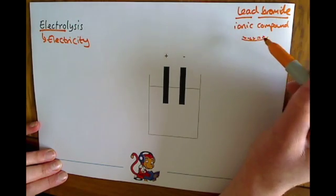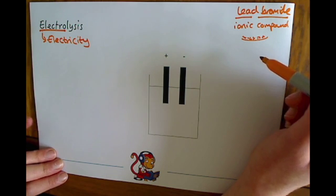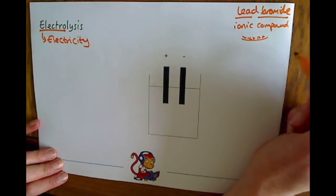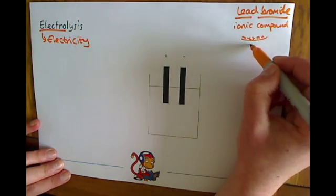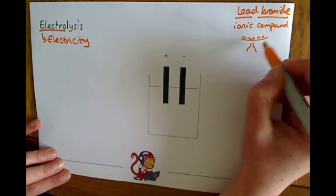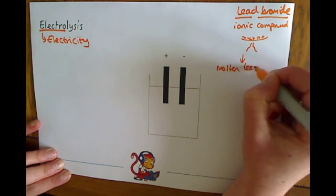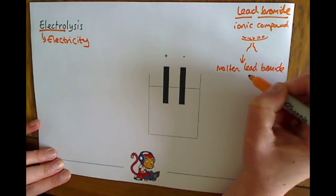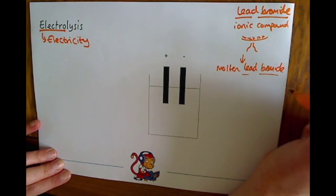Because it is solid, the lead ions and the bromide ions are not free to move. But if you remember back from the properties of ionic compounds: when they are molten — when they are allowed to flow as a liquid — they can then be broken up by electrolysis. So the lead bromide would have to be heated and turned into molten lead bromide.